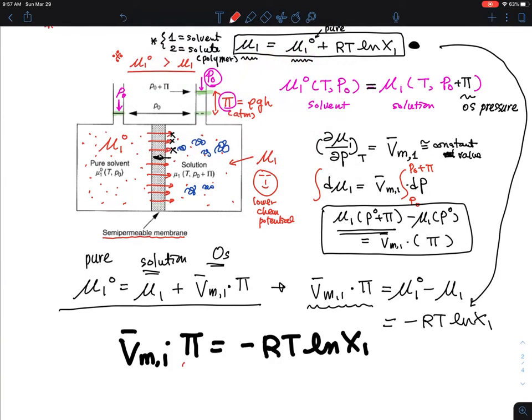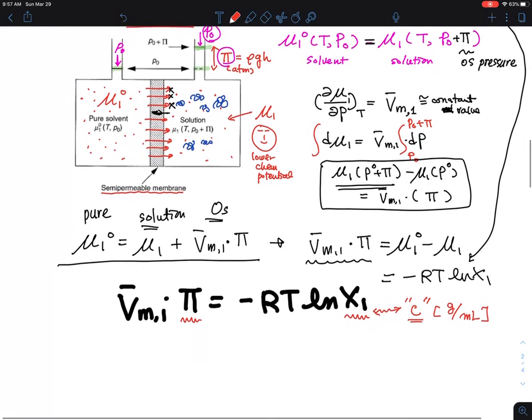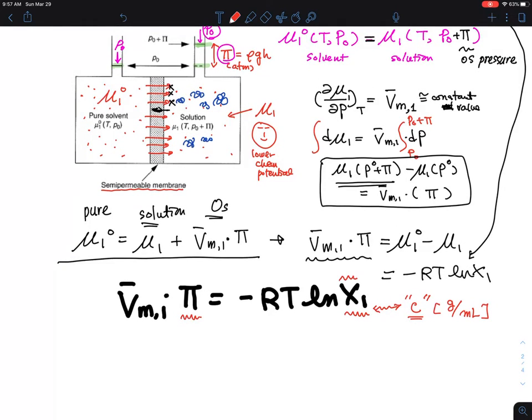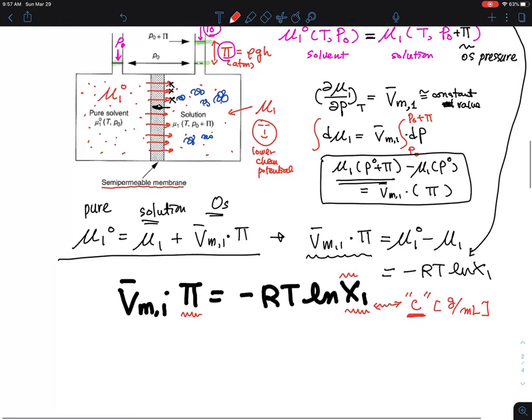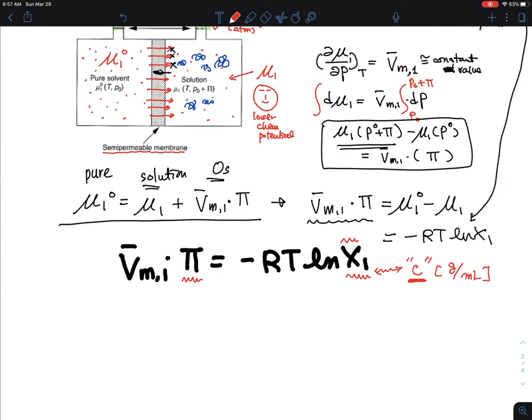So I have V̄ₘ,₁, which is solvent volume, molar volume of solvent, osmotic pressure is minus RT ln x₁. And this one is something that we are getting somewhere, which is what this equation is about here. This osmotic pressure relates to mole fraction of solvent. Osmotic pressure divided by RT is minus ln x₁ over V̄ₘ,₁.